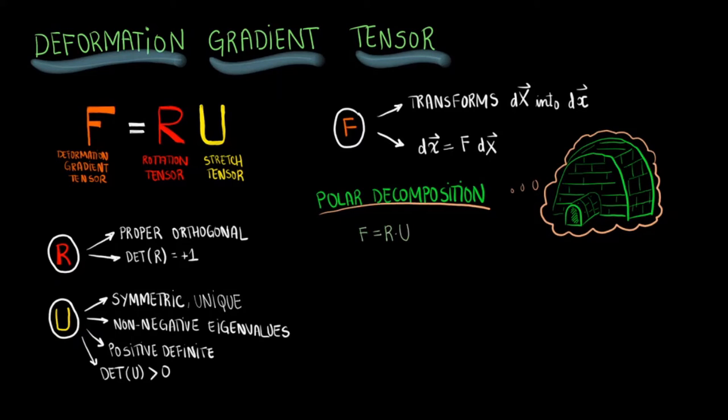From our definition of F, we can start by multiplying F by F transpose. It then follows that we have U transpose times R transpose times R times U. Since U is symmetric, U transpose equals U, and we can replace that. R transpose times R will then equal the identity matrix.